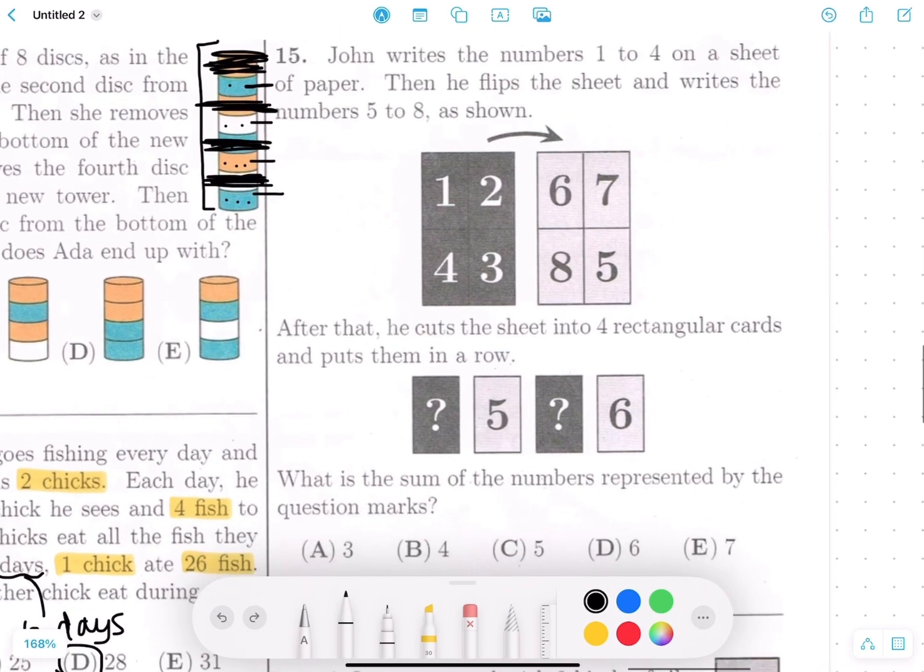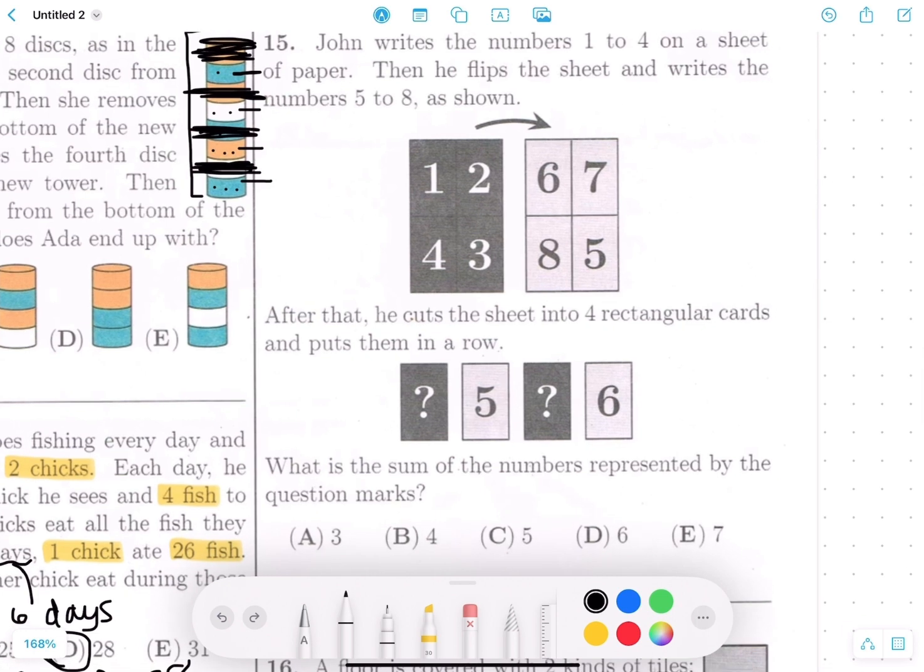Let's go to number 15. John writes the numbers 1 to 4 on a sheet of paper. Then he flips the sheet and writes the numbers 5 to 8 as shown. After that, he cuts the sheet into four rectangular cards and puts them in a row. What is the sum of the numbers represented by the question marks? Okay, this is a relatively easy problem if you keep in mind which number corresponds to which. So let's make a table.